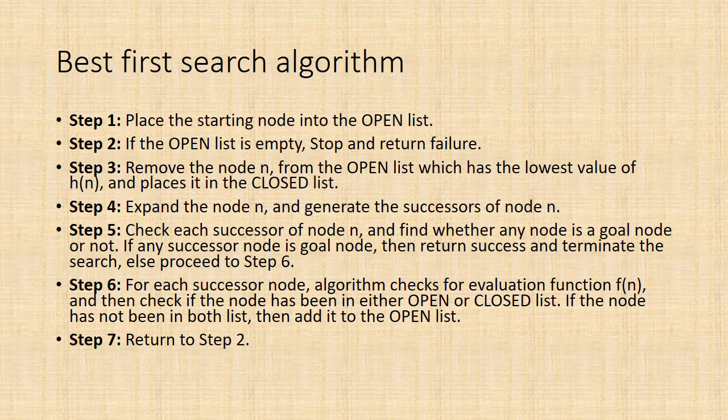Best-first search algorithm: Step 1, place the starting node into the open list. Step 2, if the open list is empty, stop and return failure. Step 3, remove the node n from the open list which has the lowest value of h(n) and places it in the closed list. Step 4, expand the node n and generate the successors of node n. Step 5, check each successor node and find whether any node is a goal node or not. If any successor node is the goal node, then return success and terminate the search, else proceed to step 6.